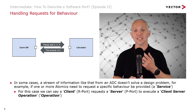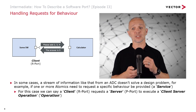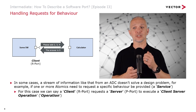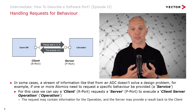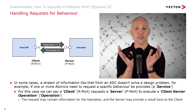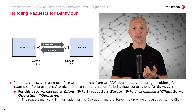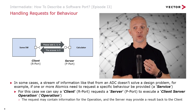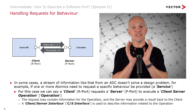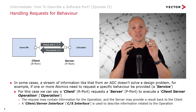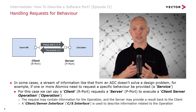In this case we can say that we have a client — an R port — which is requesting a server — a P port — to execute a client server operation, or operation for short. We're talking about a client server interface, and the request we're sending may contain information for the operation, such as the numbers we want to add together. The server may also provide a result back to the client — the answer of performing the addition. The client server interface, or CS interface for short, is used to describe the information relating to a specific operation that a server can make available as a service.